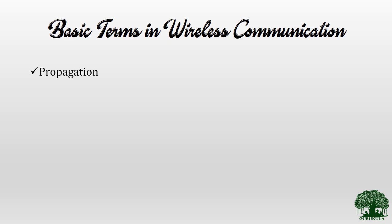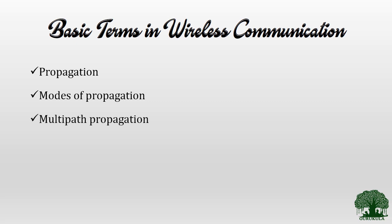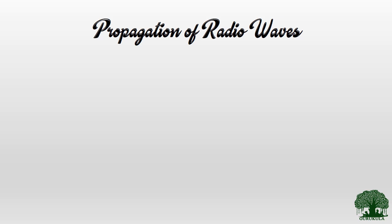Now let us get into the basic terms you will come across very often in wireless communication. The first thing is propagation, and closely related terms are: the modes of propagation, multipath propagation, the familiar term fading, and finally shadowing. These are all commonly encountered terms. It is very much mandatory to understand exactly what these terms mean — once we are clear on them, it will be easy to understand upcoming videos on wireless communications, including path loss.